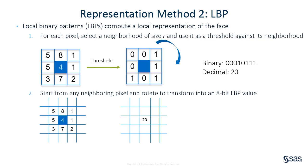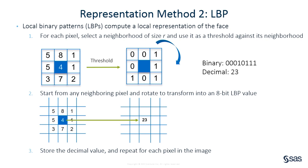The starting point of the binary string is chosen by minimizing the decimal value after conversion. There are other ways to determine the LBP value, and the popular one is called Uniform LBP, which constructs a binary string containing at most two bitwise transitions. One bitwise transition refers to a change in the binary code from 0 to 1, or vice versa. We can do such conversion and calculate the LBP value for each pixel in an image.